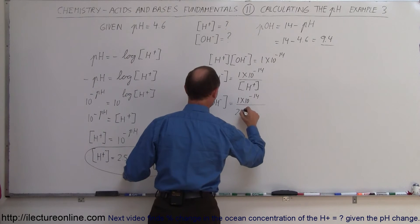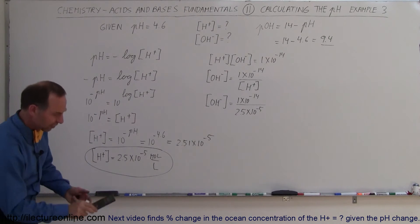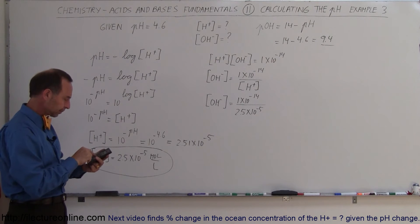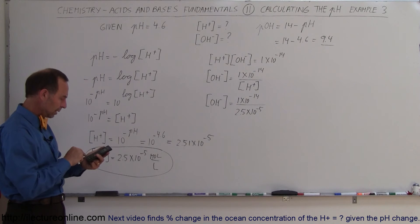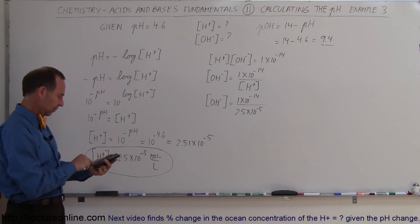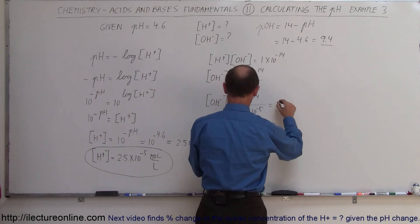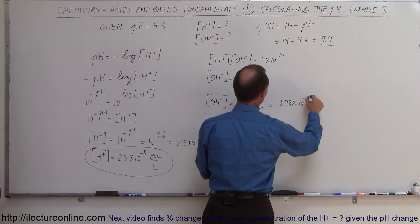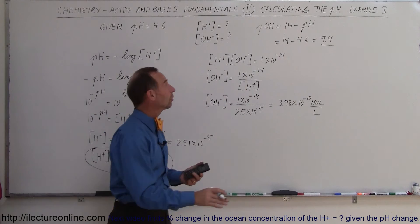Using the more precise calculator value of 2.511886 for [H⁺], and dividing 1 × 10⁻¹⁴ by that number, we get [OH⁻] = 3.98 × 10⁻¹⁰ moles per liter.